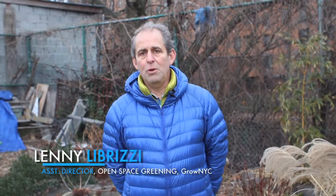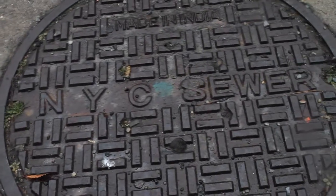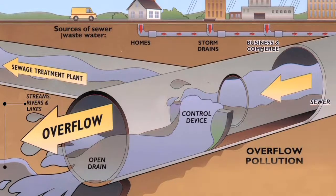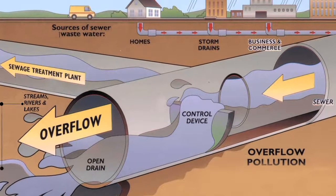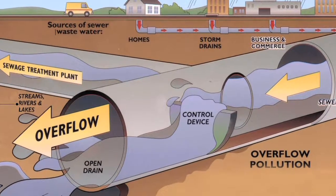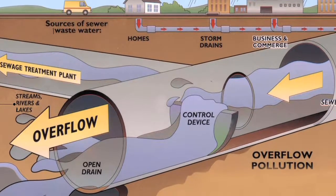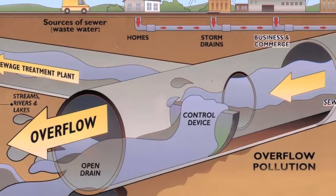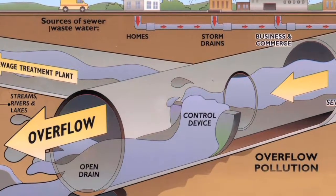In New York City we have what's called a combined sewer system, so both stormwater sewers and the sanitary sewers share the same pipes and the same sewage treatment plants.